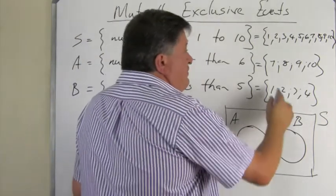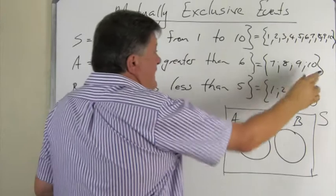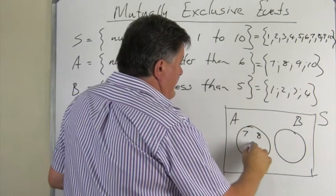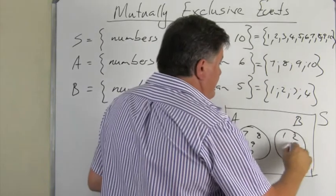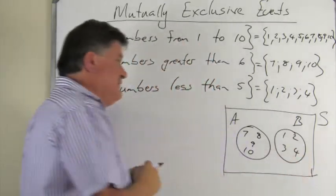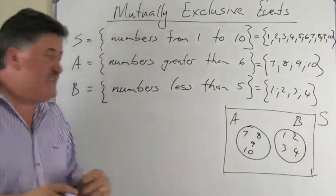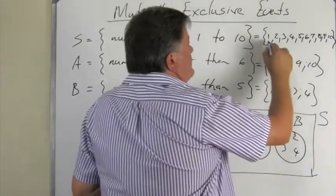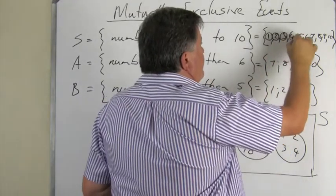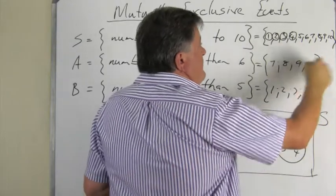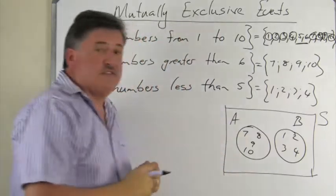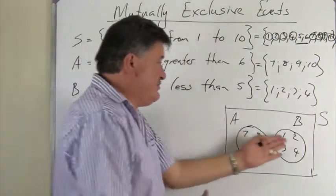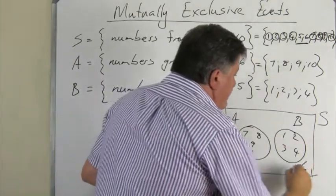So now you can look at A, with the numbers 7, 8, 9, and 10. Event B has got the numbers 1, 2, 3, and 4. Are there any outcomes missing from the sample space? And of course, 1, 2, 3, 4 from B, 7, 8, 9, 10, and still not within the two events: 5 and 6.